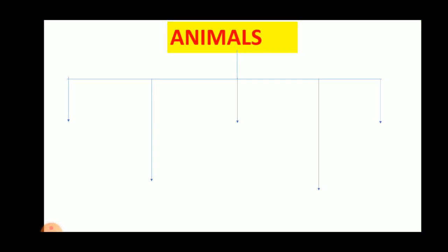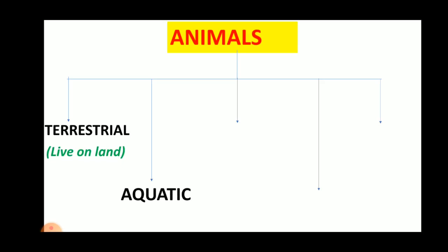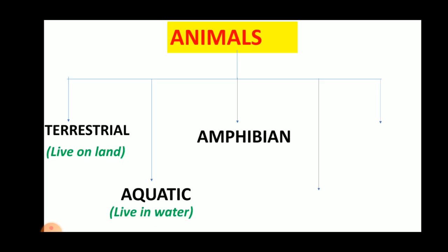The first group is Terrestrial Animals. The second is Aquatic Animals. The third is Amphibian.